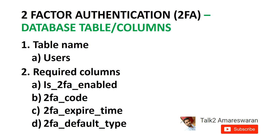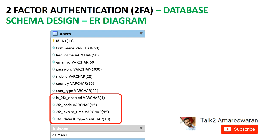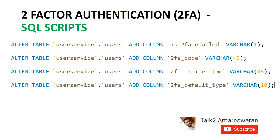So 2FA_default_type represents the user's 2FA preference. In total, we have four columns in the 'users' database table. Looking at the ER diagram, I already have a 'users' table with columns such as ID, first name, last name, email ID, password, mobile, country, and user type. Along with these, I added four more columns: is_2FA_enabled, 2FA_code, 2FA_expired_time, and 2FA_default_type.